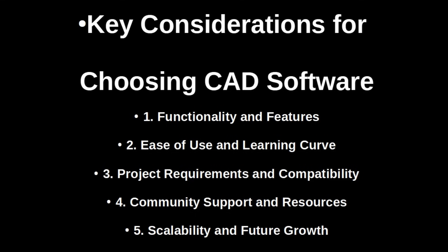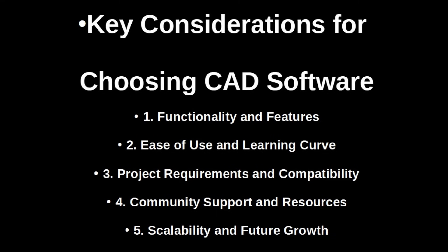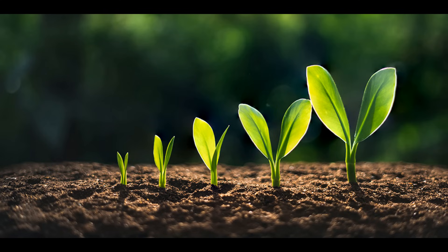Four: community support and resources. The availability of tutorials, forums, and online communities can significantly aid users at all levels. Beginners benefit from extensive support resources, while intermediate and advanced users may require more technical documentation and forums for troubleshooting. Five: scalability and future growth. Consider the software's scalability as your skill evolves. Software that accommodates growth from beginner to advanced reduces the need to transition between platforms — but it's guidance, not a straitjacket.